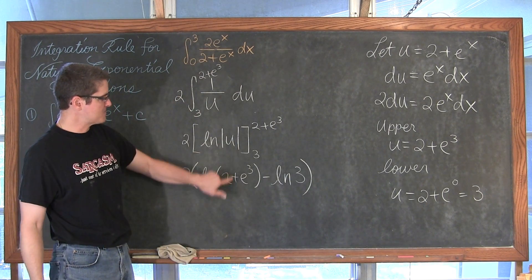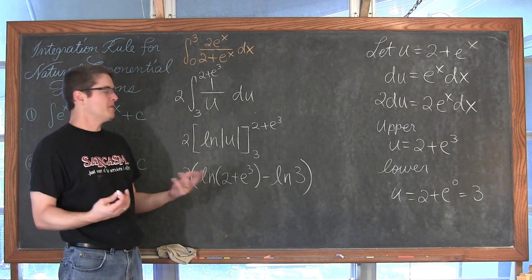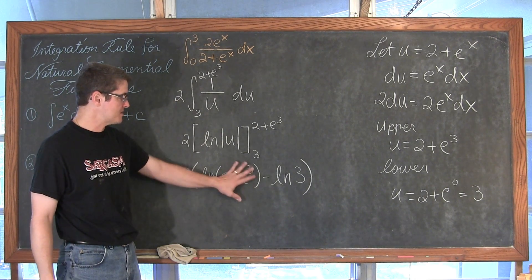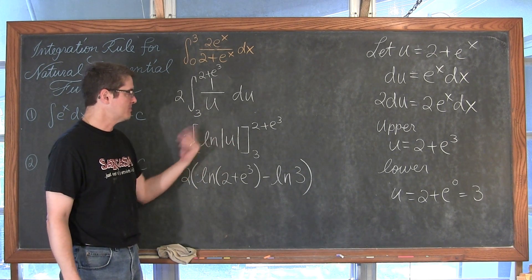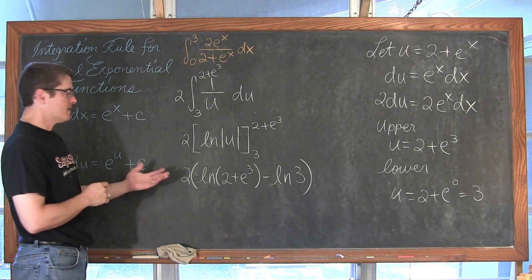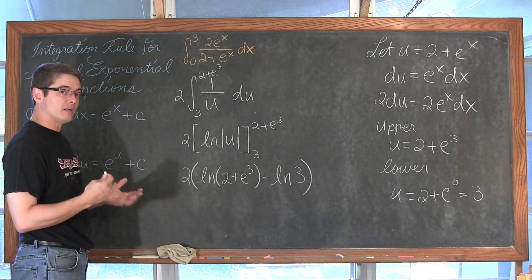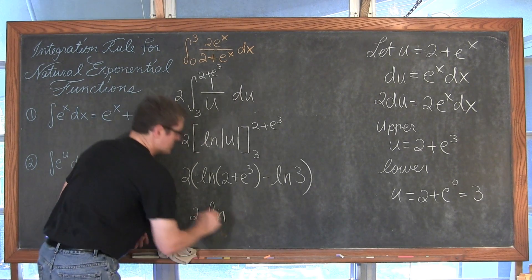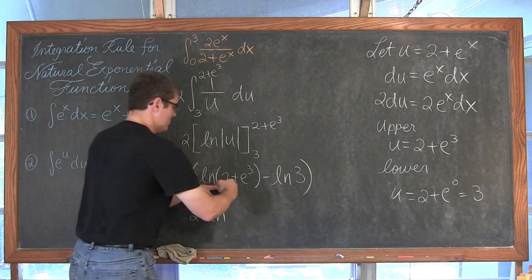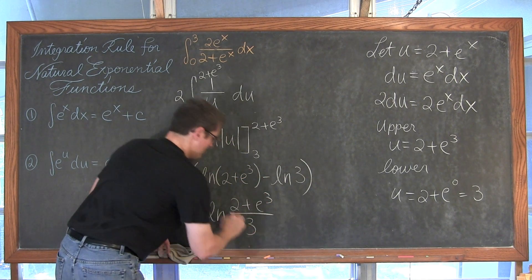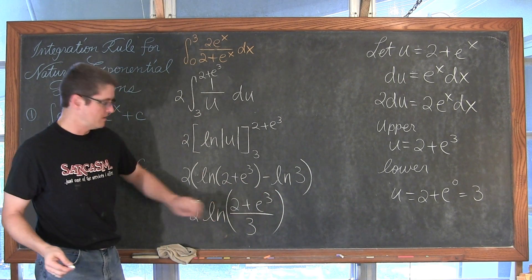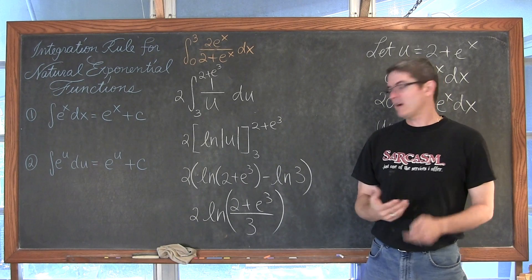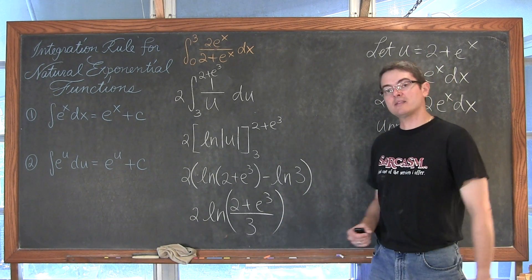We have 2 times the natural log of 2 plus e to the third, minus the natural log of 3. I removed the absolute value signs because 2 plus e to the third cannot be negative, and 3 is positive as well. Using the subtraction of logs rule, we can compress this into 2 times the natural log of the quantity 2 plus e to the third over 3. That is the answer in exact form.